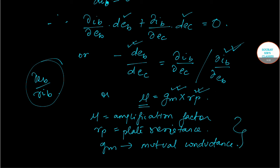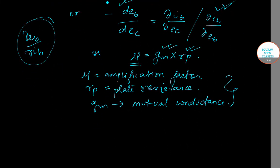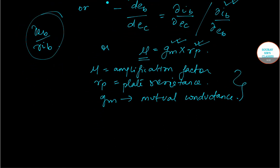What we get is that amplification factor given by mu is actually equal to the product of plate resistance, R subscript P, and mutual conductance, G subscript M.